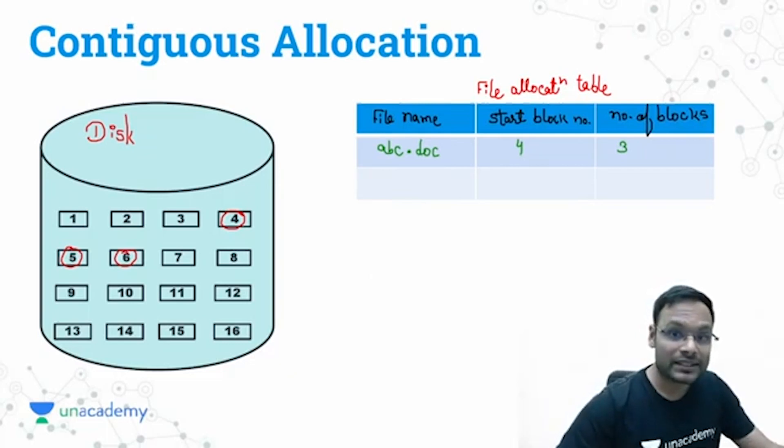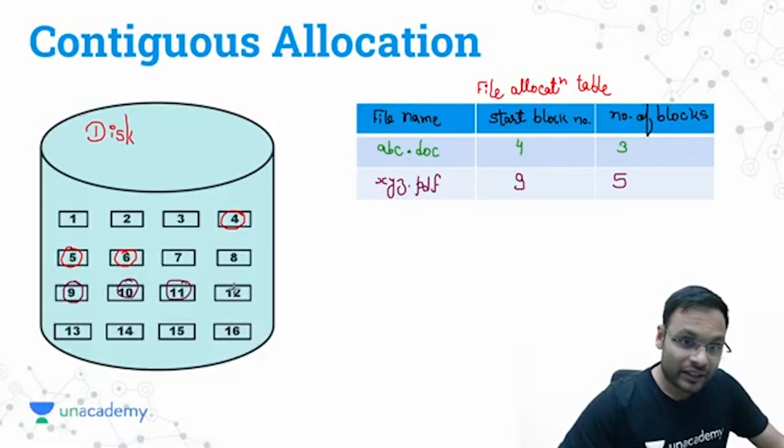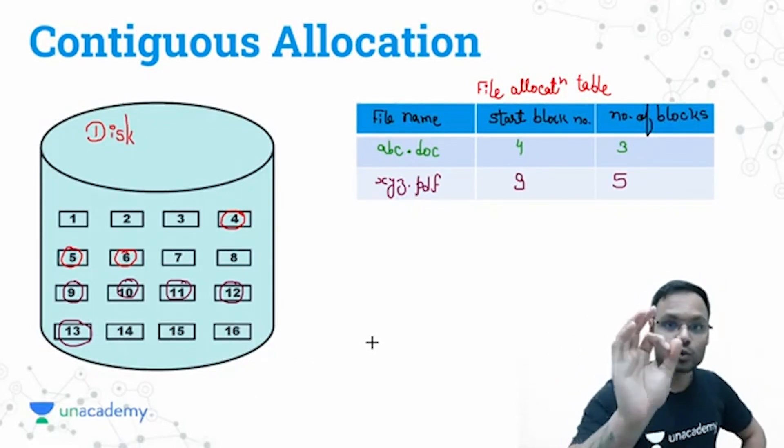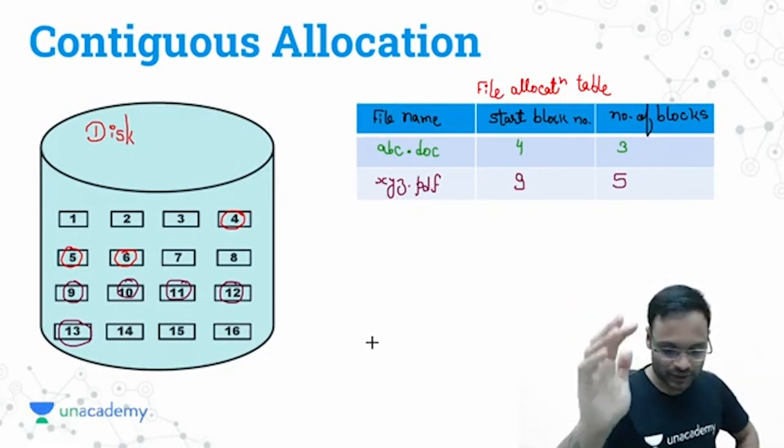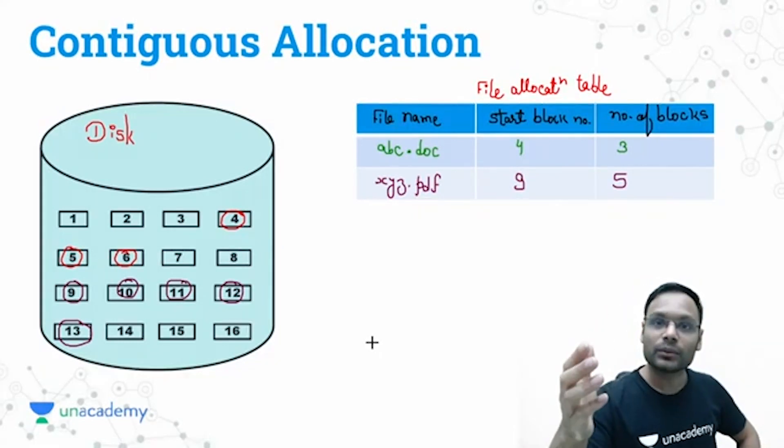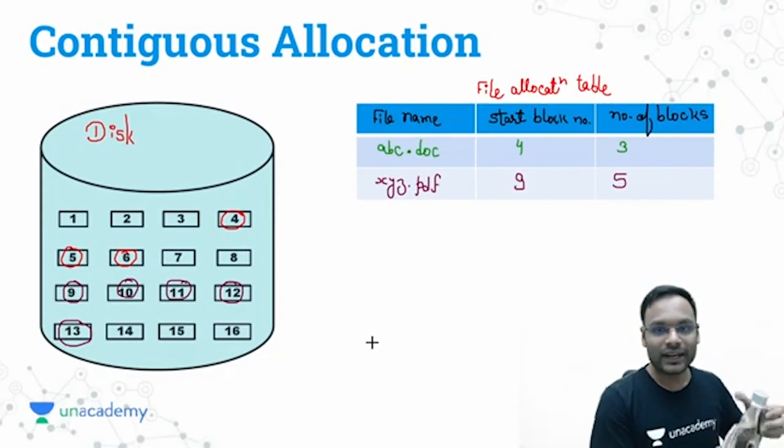Let's go for another example. We have another file, xyz.pdf. That file is stored starting from block number 9 and needs 5 blocks. Consecutive blocks are needed, so 9, 10, 11, 12, and 13—these 5 blocks are needed contiguously to store that file. That is the contiguous allocation.